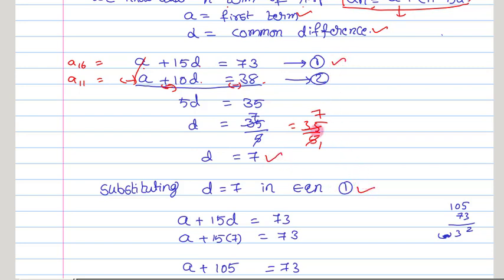What is our equation 1? Equation 1 is a + 15d = 73. Substituting d = 7, this becomes a + 15(7) = 73, which is a + 105 = 73.